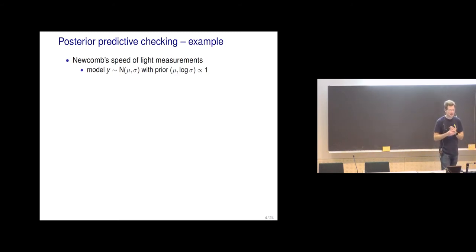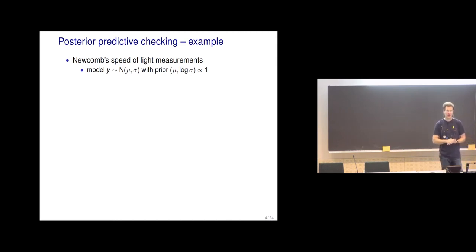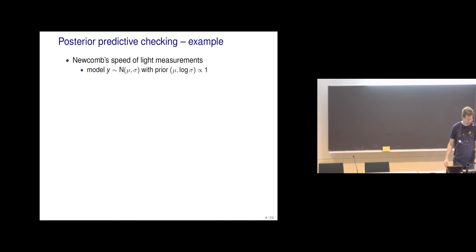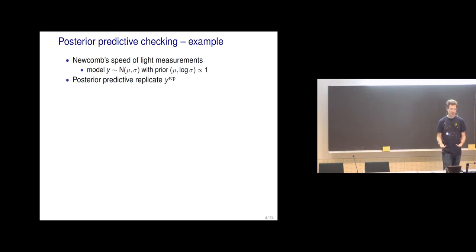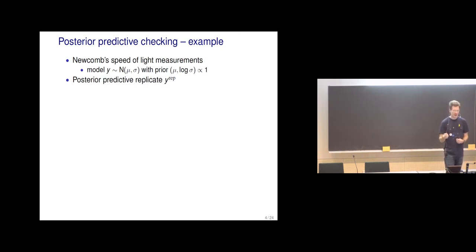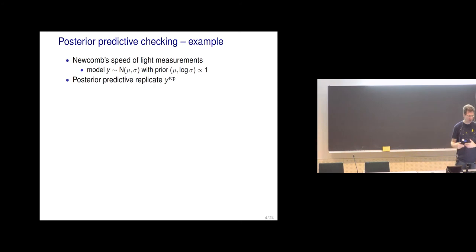The posterior predictive checking — the name says it: we are looking at the posterior predictions. Newcombe's speed of light example is familiar from the book. We use a normal distribution model to explain variation in observations, and we want to know the accuracy. We form the posterior distribution and, given the posterior, we form the posterior predictive distribution and sample from it. The notation y_rep is a replicate — meaning we draw as many samples from the predictive distribution as the size of the original data, replicating the data by simulating from the model.